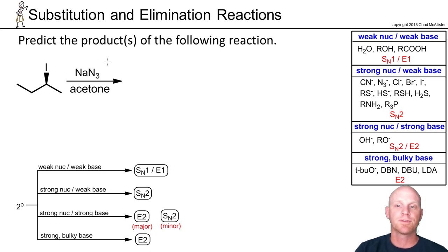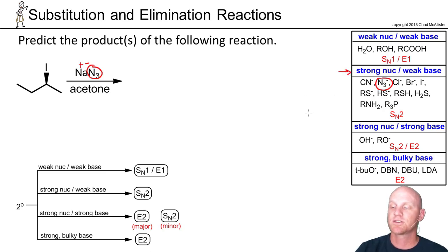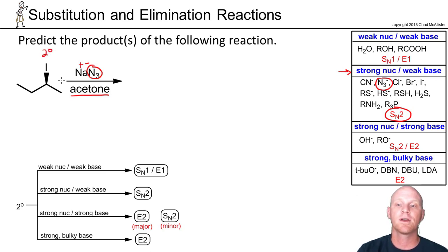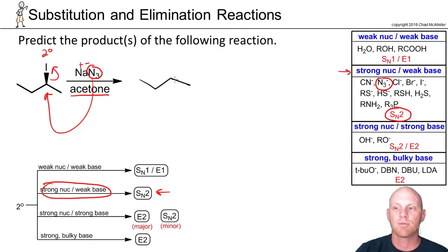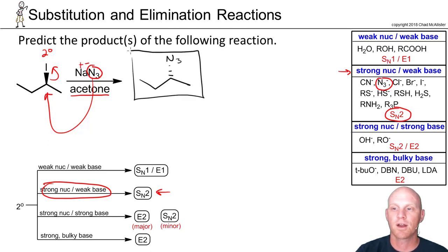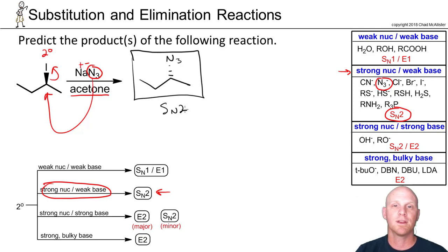Example 4: the nucleophile is N3 minus (azide). N3 minus is a strong nucleophile but a weak base. As a strong nucleophile, it will do SN2; because it's not a strong base, it can't do E2. The solvent is polar aprotic, which is icing on the cake for SN2. We have a secondary halide. SN2 proceeds via backside attack at the chiral center, giving inversion of configuration. You get only the inverted product — a single SN2 product with no competing E2 elimination whatsoever.